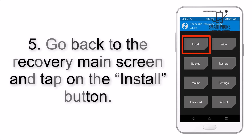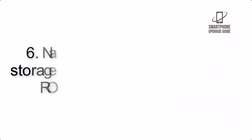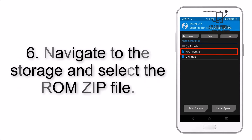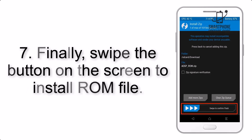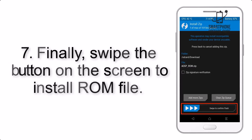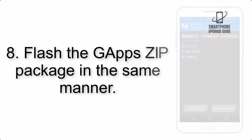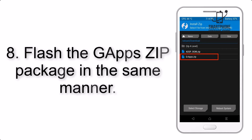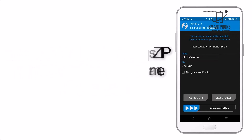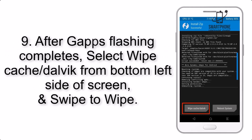Step 5: Go back to the recovery main screen and tap on the Install button. Step 6: Navigate to the storage and select the ROM zip file. Step 7: Swipe the button on the screen to install the ROM file. Step 8: Flash the GApps zip package in the same manner.